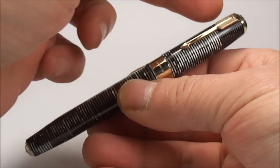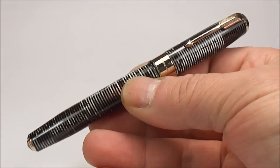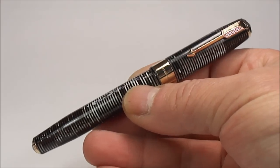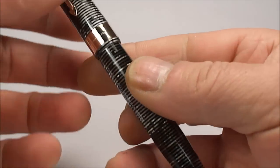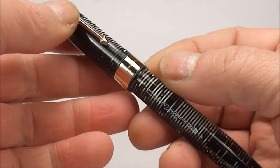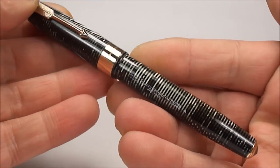The size of this particular pen from the top of the cap to the bottom of the barrel is approximately 130mm capped and around the diameter of the barrel here it's approximately 12mm in diameter.